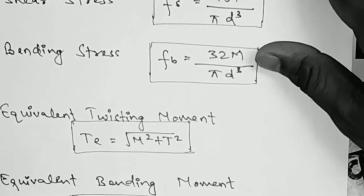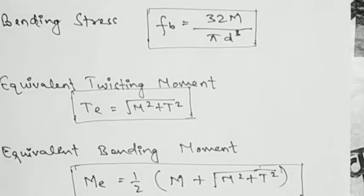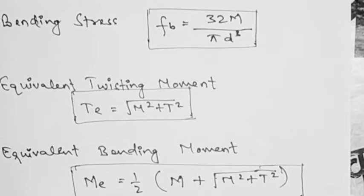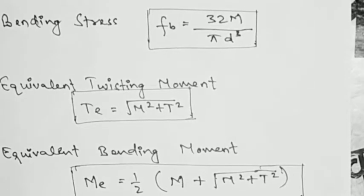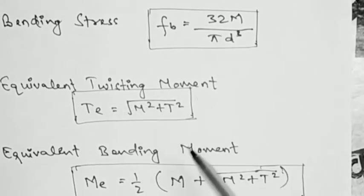The next formula is equivalent twisting moment: T_E = √(M² + T²), and it is valid for ductile materials, for example mild steel. The last one is the equivalent bending moment: M_E = (1/2) × [M + √(M² + T²)], and it is valid for brittle materials like cast iron.